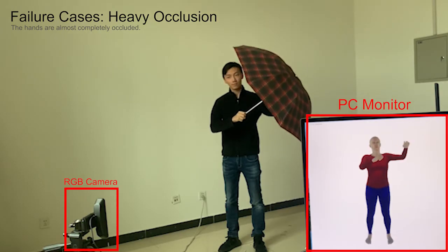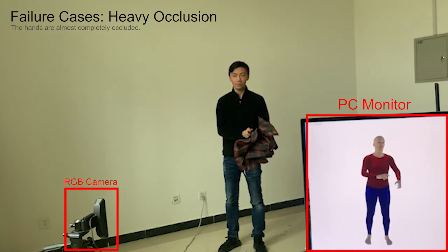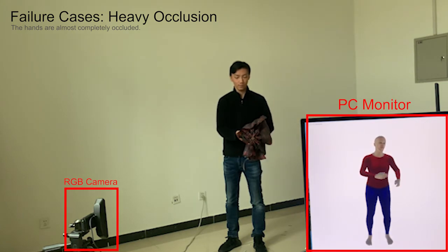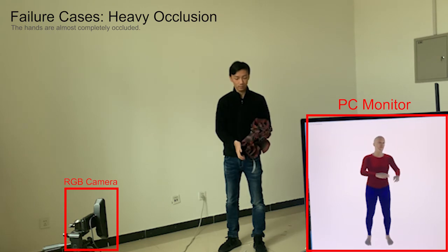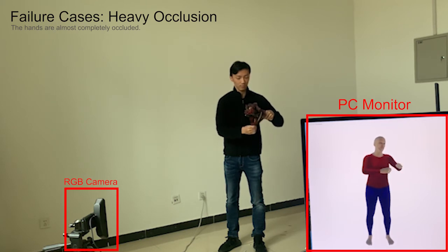We then present some failure cases. In the following, we present the case where the hands are almost completely occluded by the object. However, although the hands are not visible, the hand poses are always consistent with the arm. This is because of our exploitation of interpart correlations between body and hands.